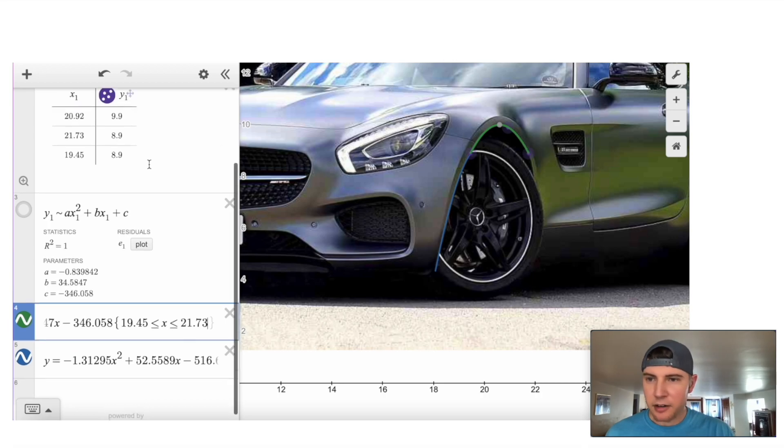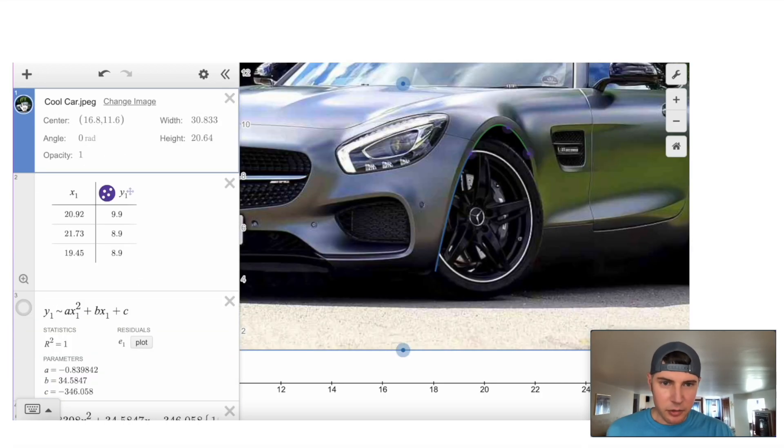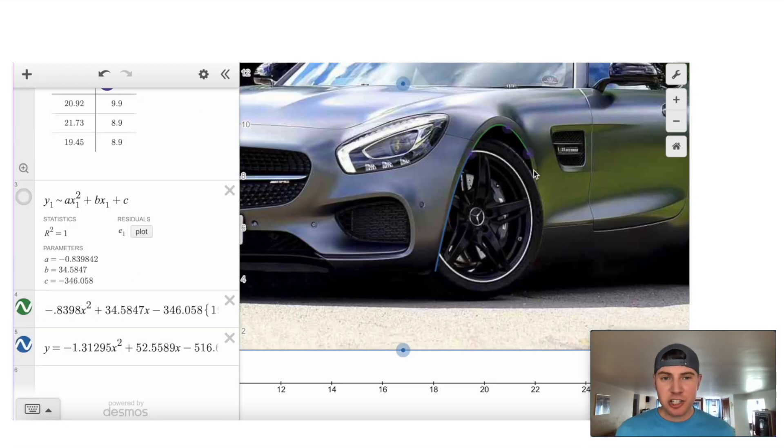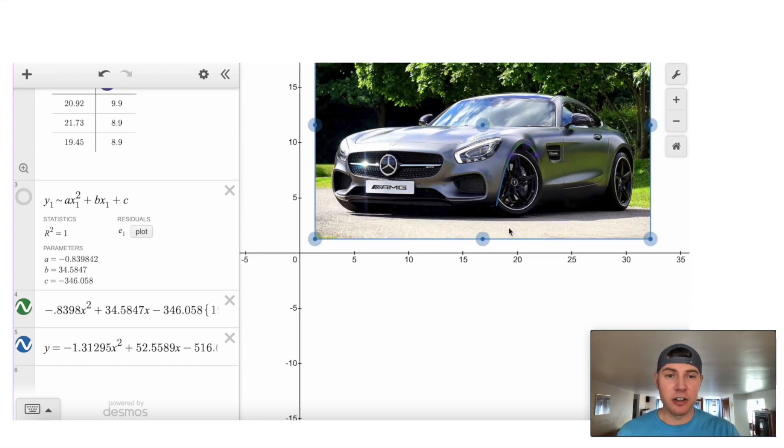I think I like it to the limits of our points. So we'll do 19.45 up to 21.73. So squiggle mark, 19.45 less than or equal to x less than or equal to 21.73. And there it is right there. And if we scroll up here, we can see that we're starting to form the wheel well.